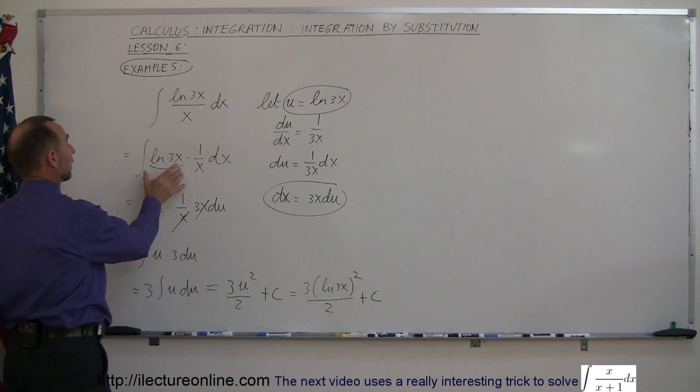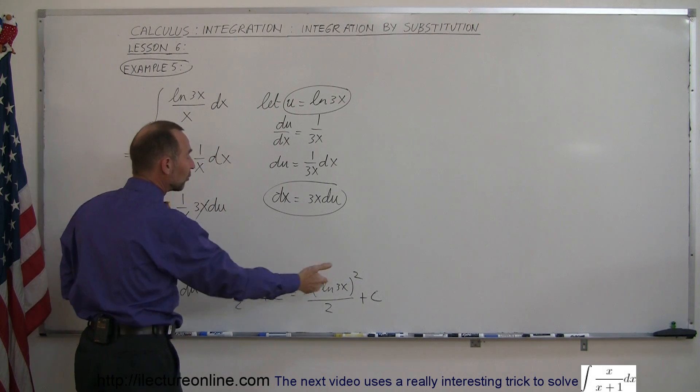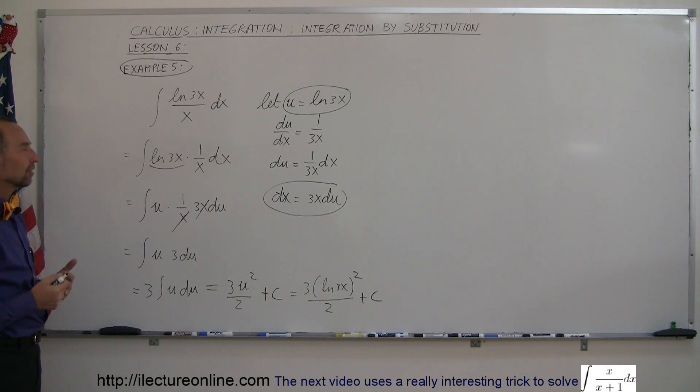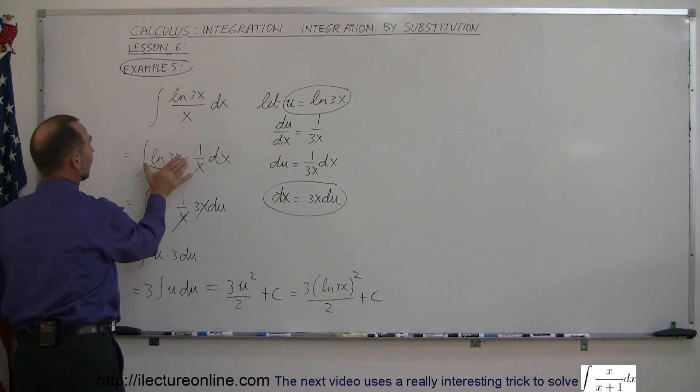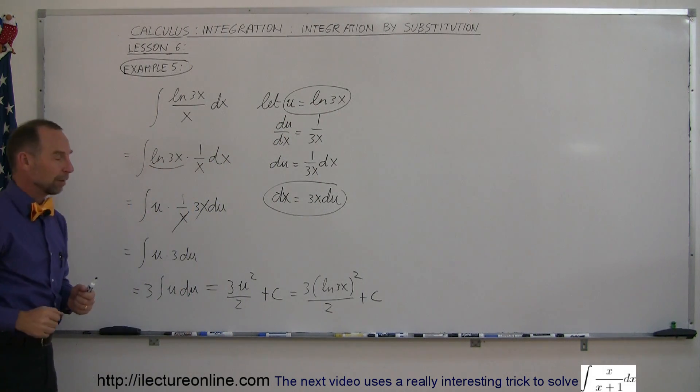But in this case, if you let the natural log of 3x equal u, you can see that it works out and you can solve the problem. So sometimes it's kind of hit and miss. You may not know exactly what to substitute, but here's the example. And I recommend when you see something like this, take the whole natural log of 3x and make that equal to u. And as you can see, then you can solve the problem.